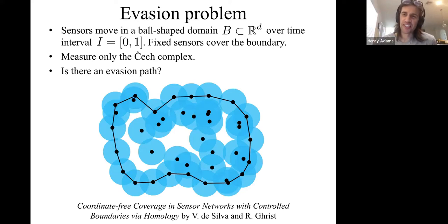Welcome folks. I want to explain what zigzag persistent homology might have to do with evasion paths in mobile sensor networks.